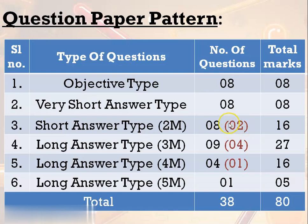There are internal choices for 2 questions out of the 8 two-mark questions. Internal choice means in the same question we have 2 options and we can attend any one of them. If you know both and have time you can attempt both — the answer getting maximum marks will be considered. This helps the student, which is why internal choices are given for 2 questions in the 2-mark section.